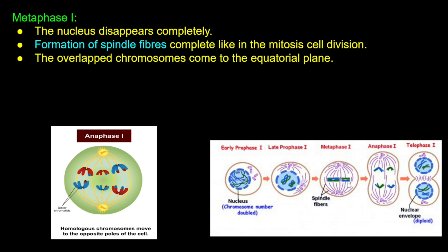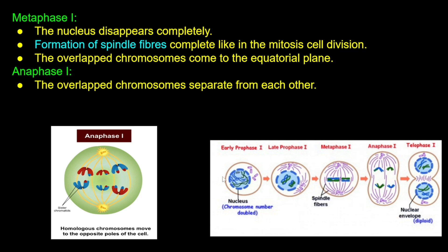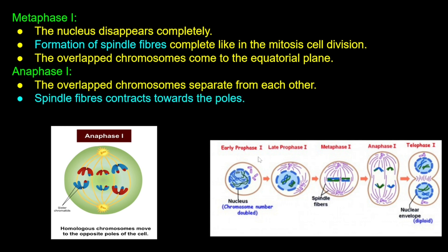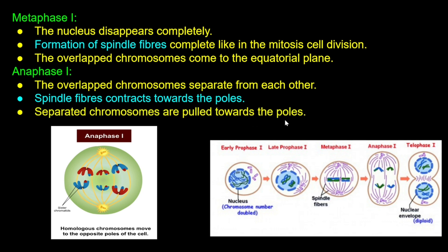The homologous chromosomes come to the equatorial plane. The homologous chromosomes separate from each other. Next, spindle fibers contract towards the pole, pulling the separated chromosomes towards the pole. Then a new nucleus begins to form — this is the beginning of Telophase.